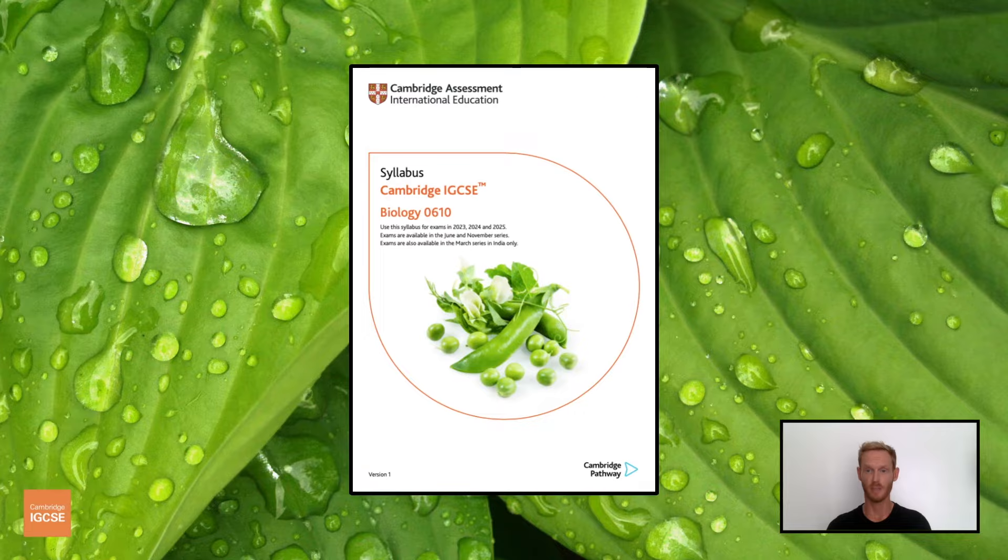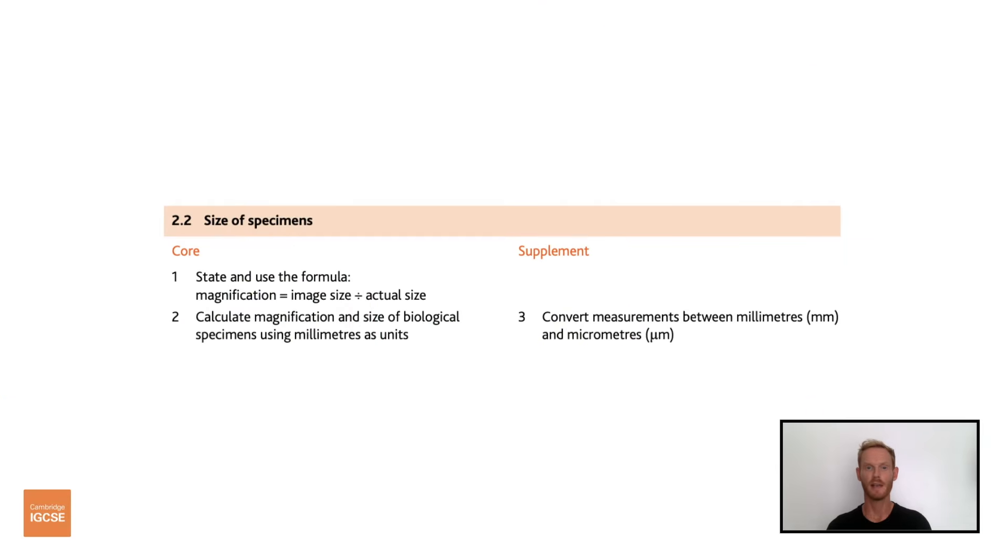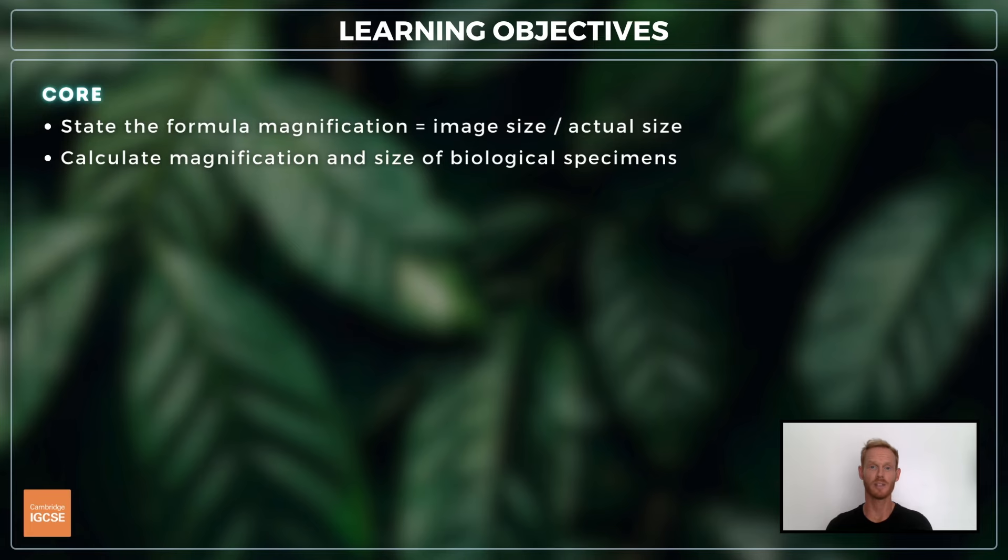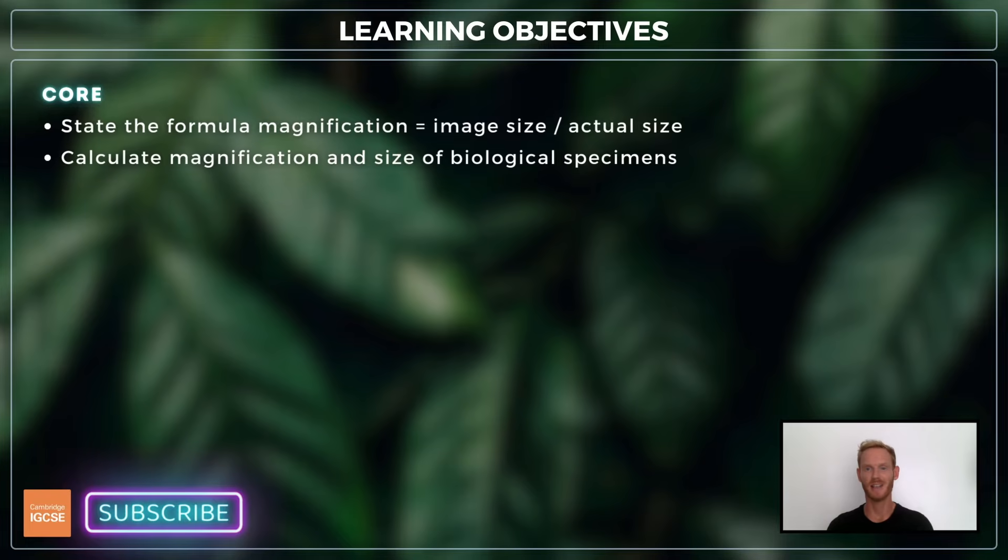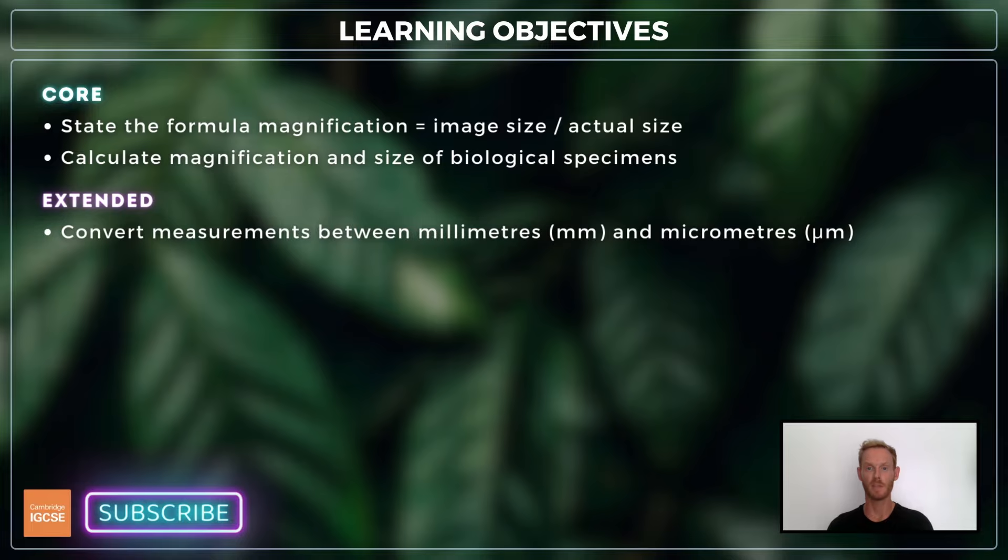As always, we'll be following the Cambridge syllabus exactly, and we'll cover absolutely everything you need to know for your final exam. For this short topic, you need to be able to state the formula magnification equals image size divided by actual size, calculate magnification and size of biological specimens, and for extended, convert measurements between millimetres and micrometres.